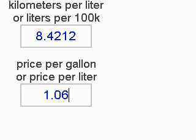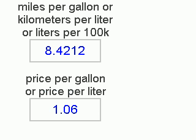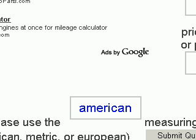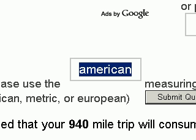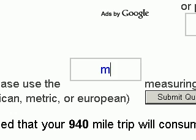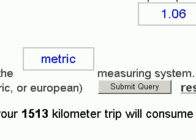The efficiency of our vehicle is 8.4212 kilometers per liter and our price per liter is 1.06. We're going to pretend that we're in Canada, so in this case it would be 1.06 Canadian dollars, which right now is basically the same as the US dollar. Since we're using the metric system, we need to tell the calculator we're using the metric system, so instead of American we will put in metric — just be sure to spell it correctly. Then we'll click our submit button.